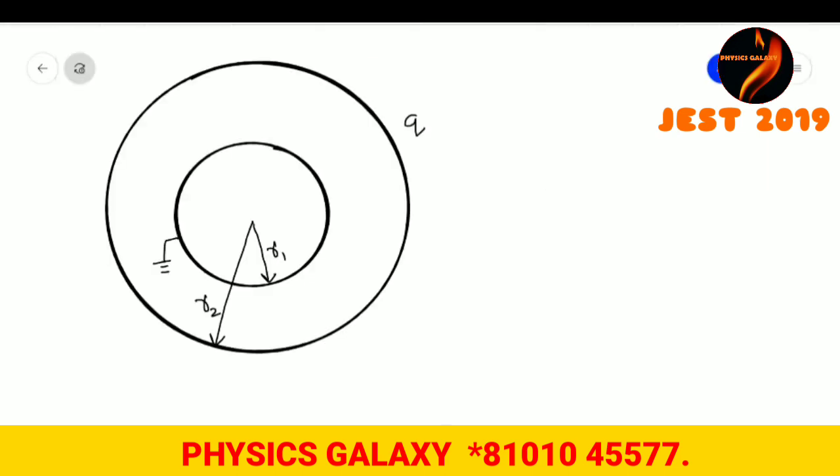We have two concentric spherical shells. The inner one has the radius R1 and the outer shell has radius R2. Inner shell has been grounded and outer shell is charged Q. And we need to find how much charge will be on the inner shell. So let's denote that by Q' and we have to find this Q'.